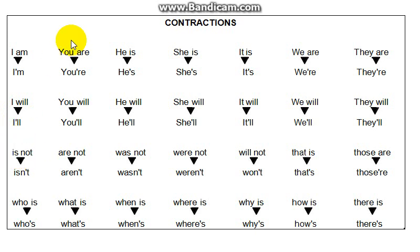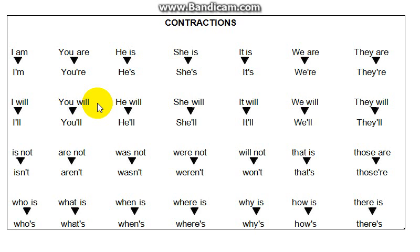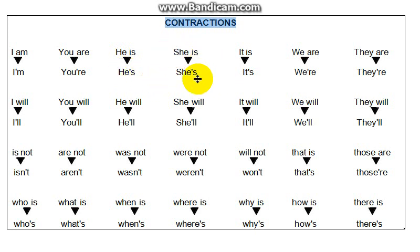Then you have 'you are,' which becomes 'you're,' as in 'you're all good.' 'You will' becomes 'you'll,' as in 'you'll be going.' 'He is' becomes 'he's,' as in 'he's a good boy.' 'She is' becomes 'she's,' as in 'she's a good girl.' And 'it is' becomes 'it's.'